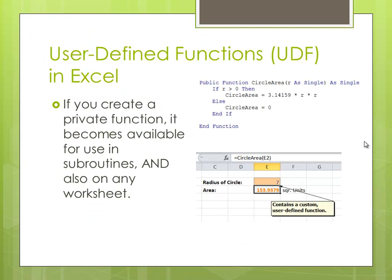If you create a public function, it becomes available for use in subroutines and also on any worksheet. You can see in this example with my public function circle area — not only can I call it from a subroutine in VBA, but I can also call it from a worksheet using a normal function call, as is typically done in Excel. These are called user-defined functions.